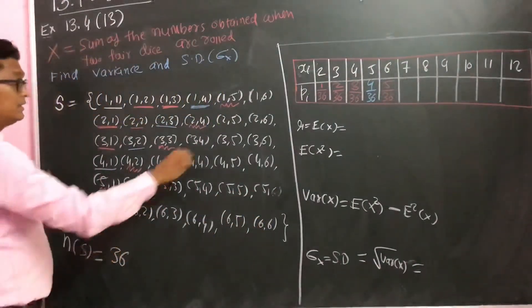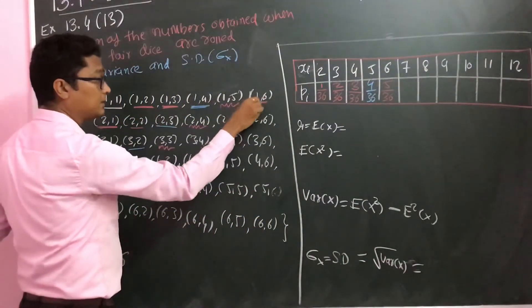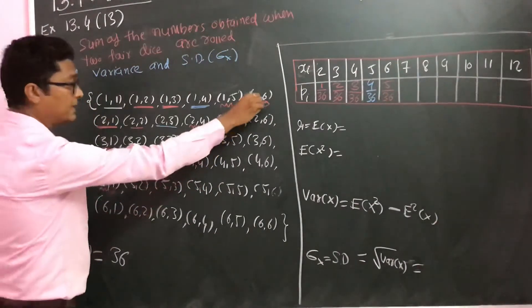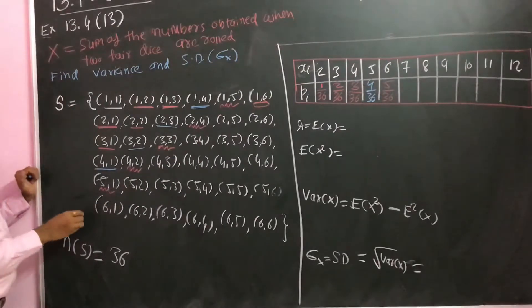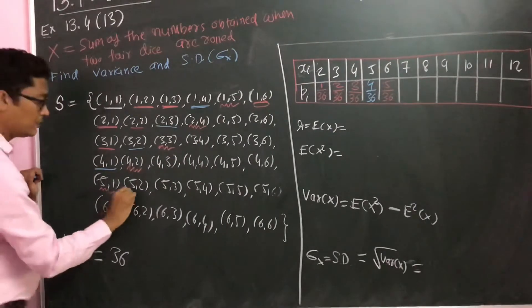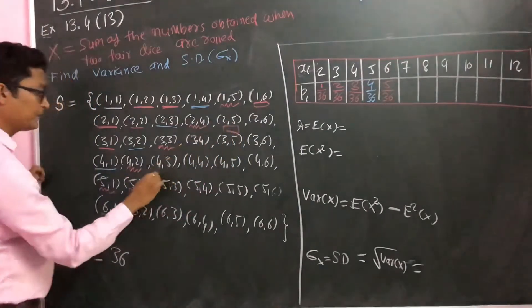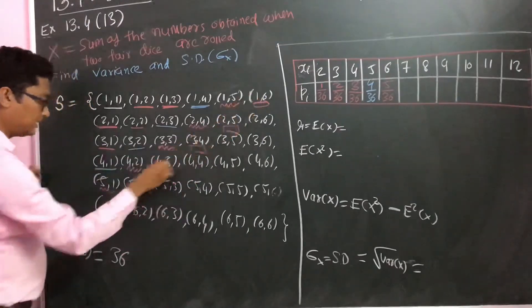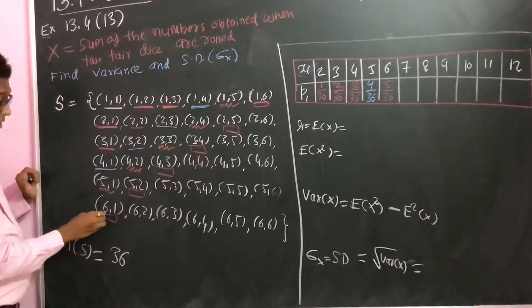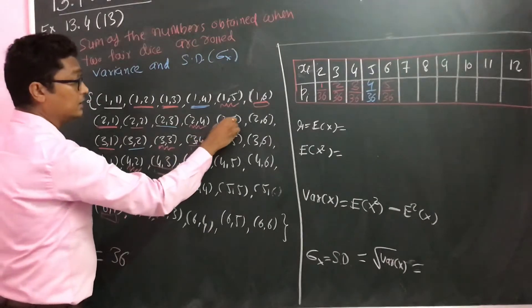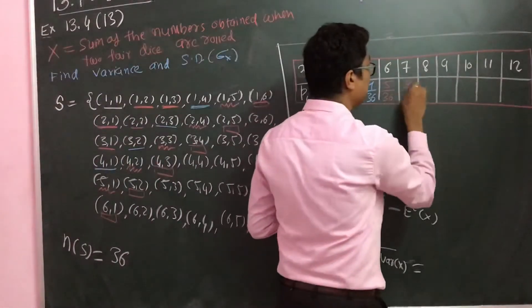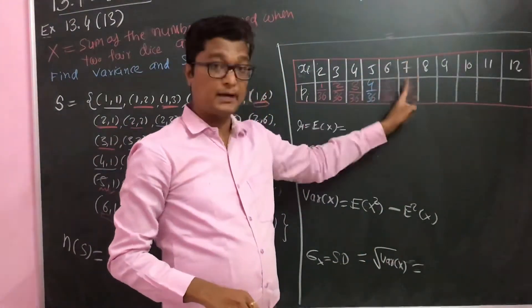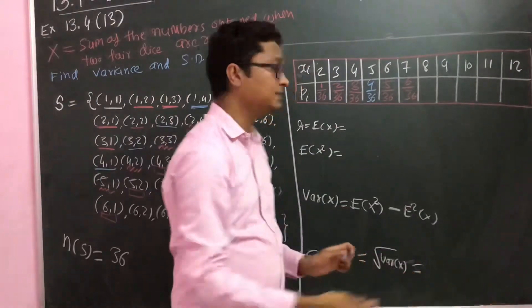Then for 7, we have 6 plus 1, so 6-1, then 5-2, 2-5, then 4-3, and 3-4. That's 1, 2, 3, 4, 5, and 6 combinations. So 6 by 36. Now it will start decreasing.